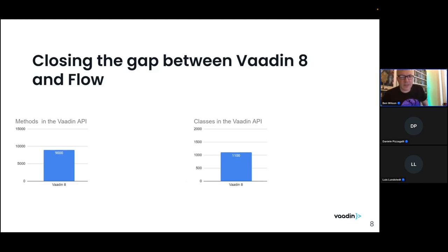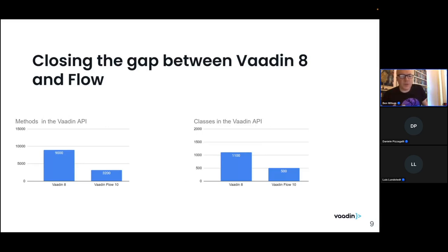When Vaadin 10 came out — the first version of Flow — we saw a dramatic shrinkage in the number of available methods. This was a complete redevelopment of the Vaadin platform, moving away from the GWT component subsystem to a web components engine and new APIs, coinciding with new web standards.